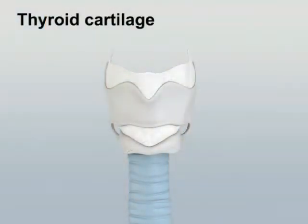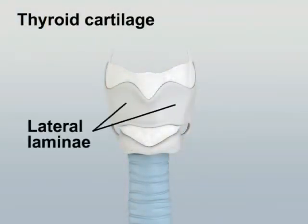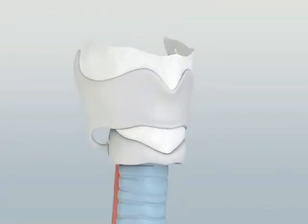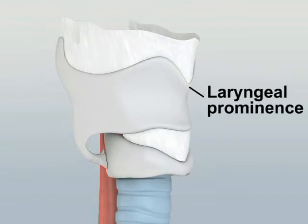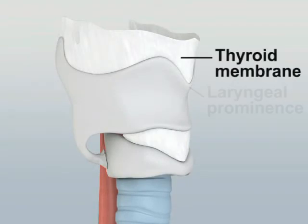The thyroid cartilage consists of two lateral laminae that join at an acute angle in the midline to form the laryngeal prominence, which is more pronounced in males. Superior to the thyroid cartilage and connecting it to the hyoid bone is the thyroid membrane.